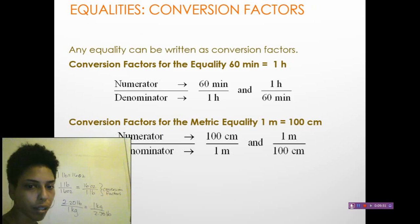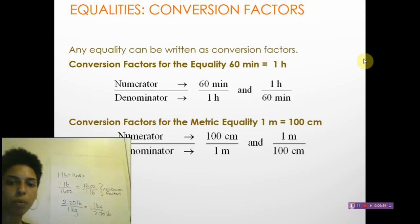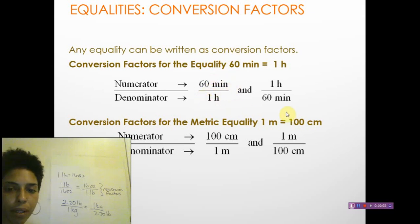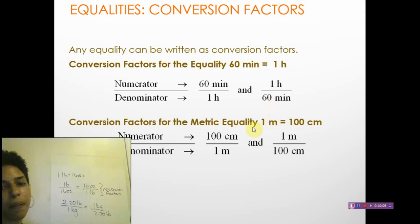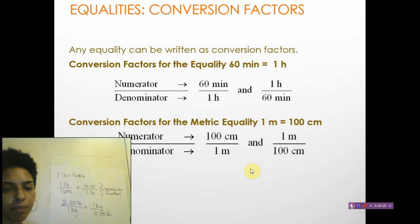For example, if 60 minutes equals one hour, then I can put 60 minutes in the numerator and one hour in the denominator, or one hour in the numerator and 60 minutes in the denominator. The same applies to metric equalities — you can write either arrangement depending on what you need.